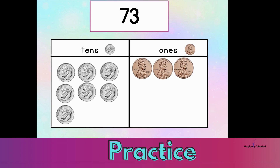Let's count to check our work. Ready? Ten, twenty, thirty, forty, fifty, sixty, seventy, seventy-one, seventy-two, seventy-three. We counted up to the number seventy-three. And in unit form language, we would say seven, ten, three.